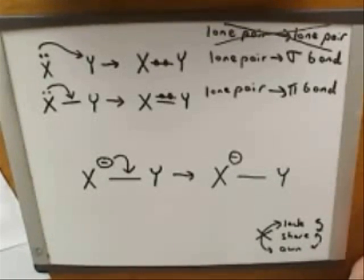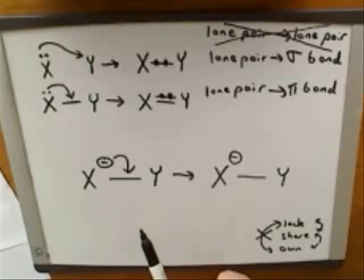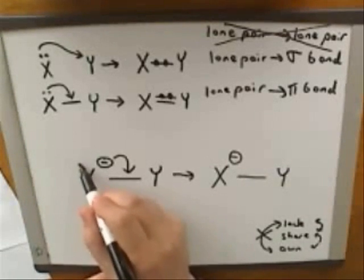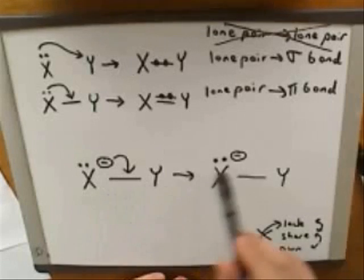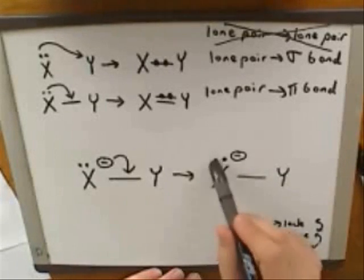Now, usually in organic chemistry we would not draw the lone pair in this situation. But I am going to draw it to make it clearer what's happening here. So in this picture I am going to go ahead and erase that lone pair because the X is not going to have the lone pair anymore. That's where the electrons are coming from.